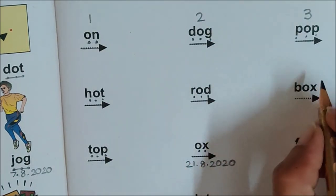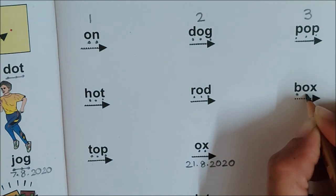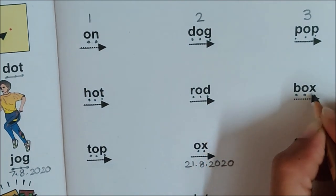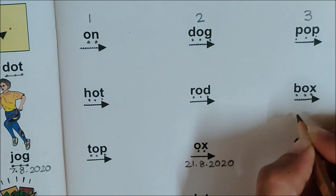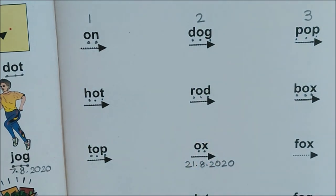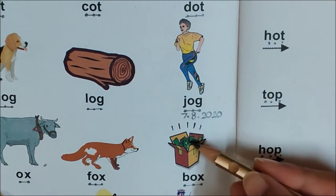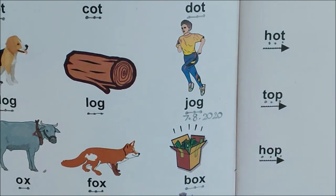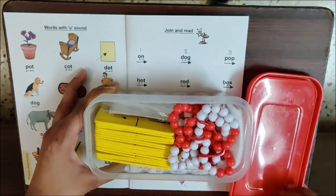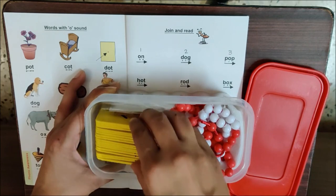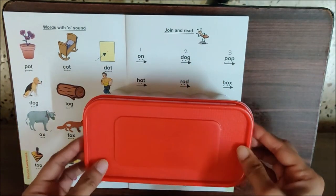Now let us read the next word. What is the first sound here, children? B. So put one dot for B. What is the next sound? O. So put one dot for O. What is the last sound? X. So put one dot for X. Now join and read. B. O. X. Box. B. O. X. Box. Box means dabba. Like here, we have a box. And what is inside the box? Money is inside the box. This is also a box. Let's open and see. Oh, I have my Ganit Mala and my flashcards. So children, you also have this box. B. Ox. Box.